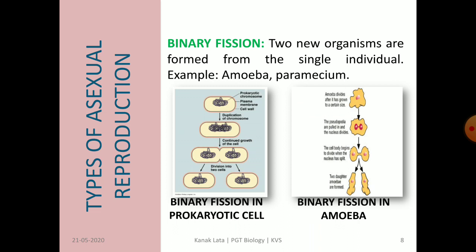Fission may be binary or multiple. First we will study binary fission. Binary fission takes place during favorable conditions. As the name indicates, binary means two, so two organisms are formed from a single parent. For example, it is commonly seen in amoeba, bacteria, and paramecium. You may observe in the figure how from one bacterial cell and one amoeba, two daughter cells are formed in both cases.